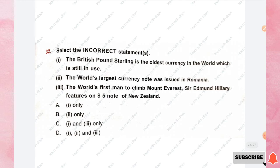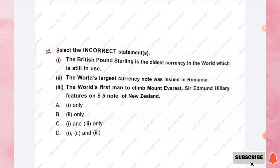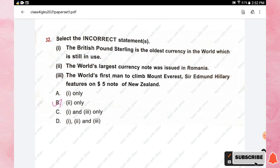Question number thirty-two: select the incorrect statement. Statements include: the British Pound Sterling is the oldest currency still in use; the world's largest currency note was issued in Romania; the world's first man to climb Mount Everest, Sir Edmund Hillary, features on New Zealand's $5 note. The incorrect statement is number two — the world's largest currency note was issued in Romania. So option B, statement 2 only, is the right answer.